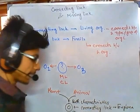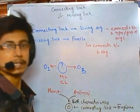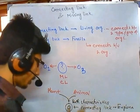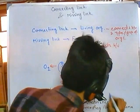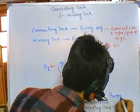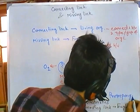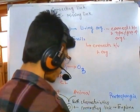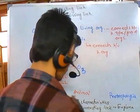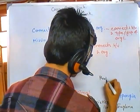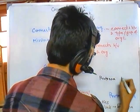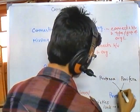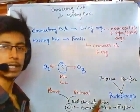Euglena carries the characteristics of both plant and animal. Another example is Protospongia, because this organism carries characteristics of both Protozoa and Porifera. That is why they are also considered connecting links.